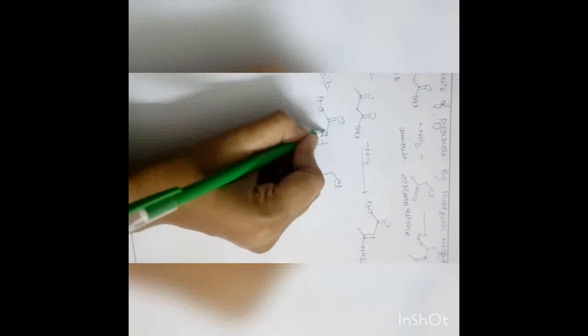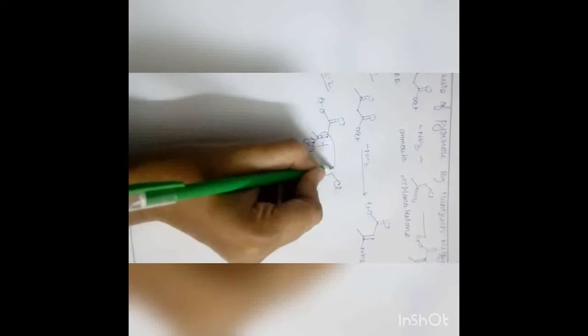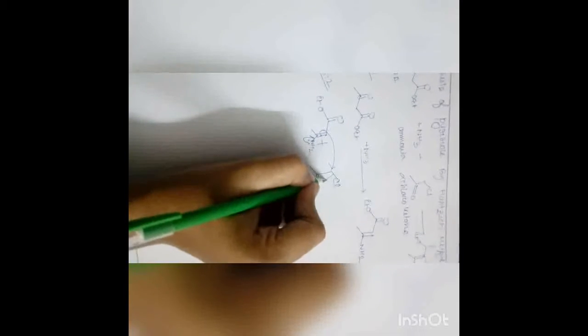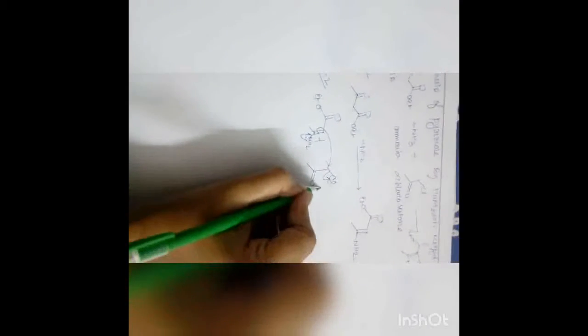The unsaturated double bond will move towards the chlorine-bearing carbon, and the chlorine will leave as a leaving group. Then, by sigmatropic rearrangement, this product will form.